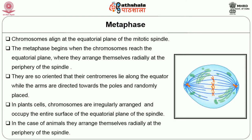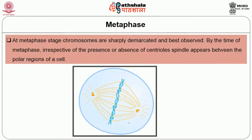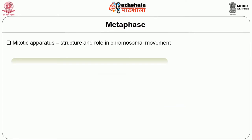Metaphase: chromosomes align at the equatorial plane of the mitotic spindle. 'Meta' means beyond, 'phases' means appearance. Metaphase begins when chromosomes reach the equatorial plane, where they arrange themselves radially at the periphery of the spindle. They are oriented so that their centromeres lie along the equator while the arms are directed towards the poles. In plant cells, small chromosomes occupy the interior and larger chromosomes are at the periphery of the equatorial plane. In animal cells, they arrange themselves radially at the periphery of the spindle. At metaphase, chromosomes are sharply demarcated and best observed.